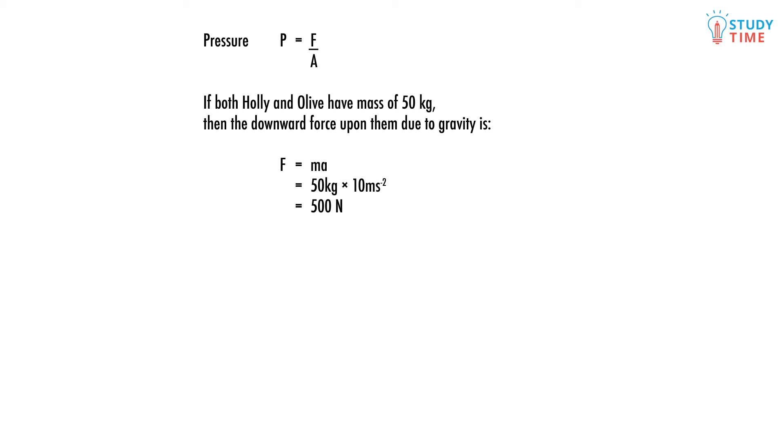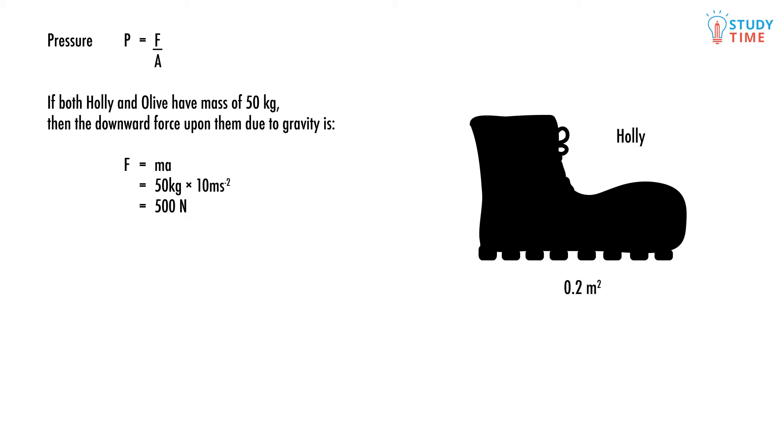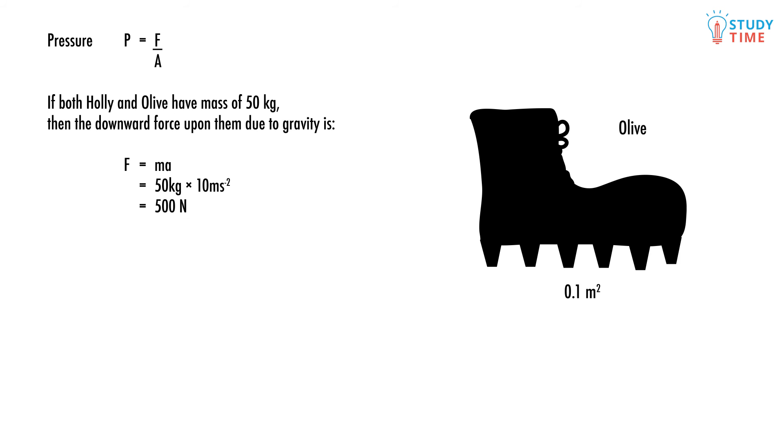The difference is the surface area of the shoes they wear. Holly's boots have a contact surface area with the ground of 0.2 meters squared, whereas Olive, with her menacing spiked boots, has a contact surface area of only 0.1 meters squared.